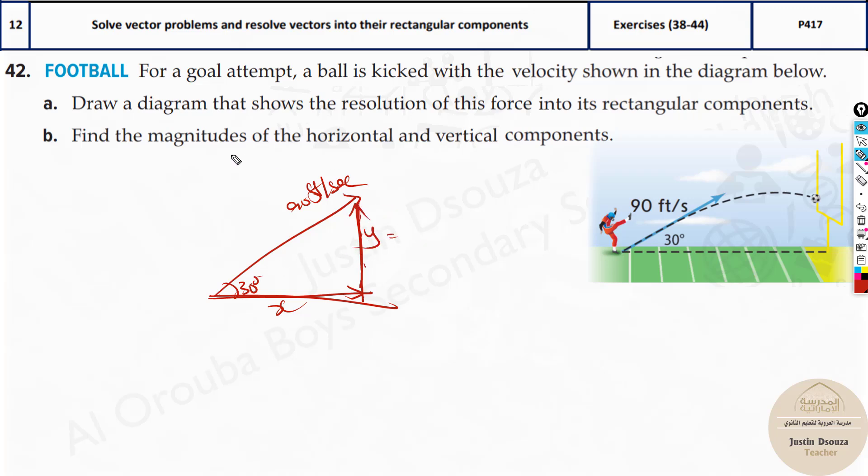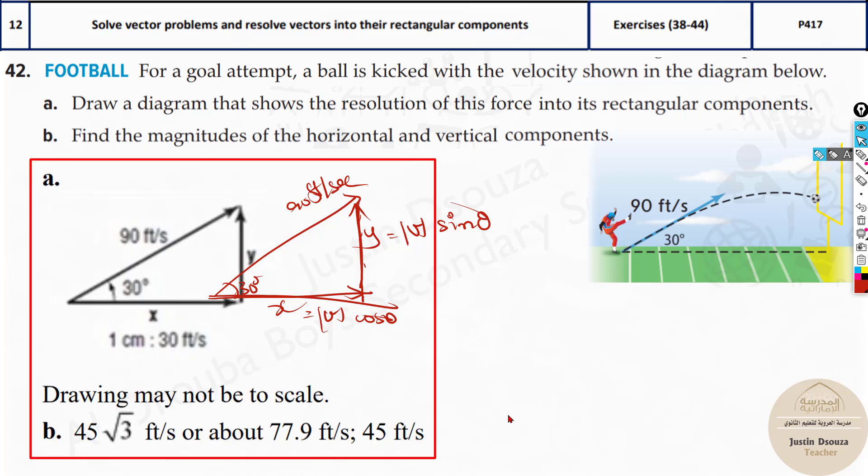And the formulas are given by, to find the magnitudes, you have to just use y equals v, which is this 90 over here, the force. Now we always take the magnitude of this. Magnitude in the sense, this will always be positive. But if it is any other sign, you have to just take the magnitude, make it positive itself. Then we have sine theta, 90 sine 30 degrees. And x is v cosine theta. This is the formula. Just put the values over here, just like what we did in the previous problems, you will get the answers. These are the answers.